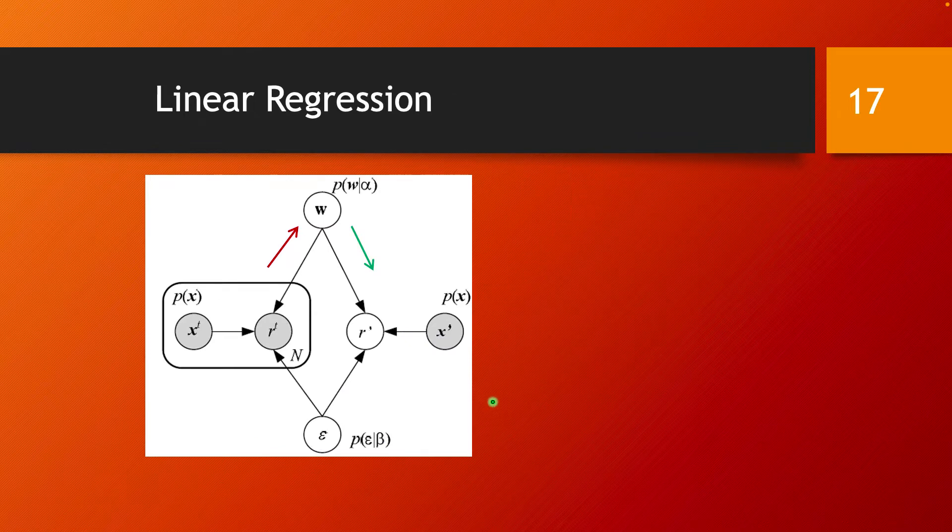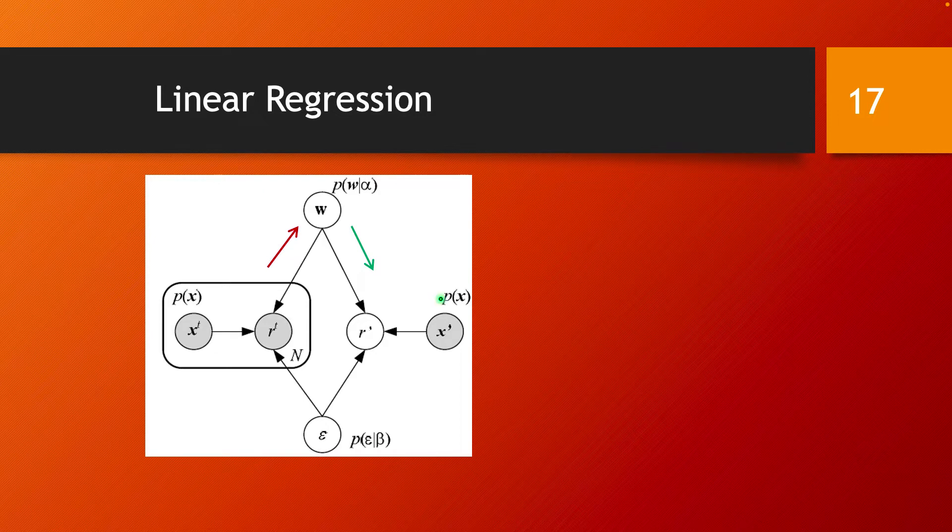A linear regression problem can also be visualized as a graphical model. We have the data point X prime, which is drawn from a prior distribution P of X. And the output of the model on this particular data point is R prime, which is calculated based on this data point X prime and also on a weight vector W. So this node has edges from the node corresponding to W and from the node corresponding to X prime. The weight vector W may have its own prior distribution, which is parameterized by some parameter alpha.